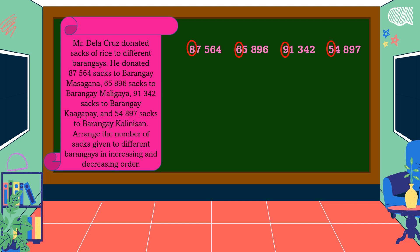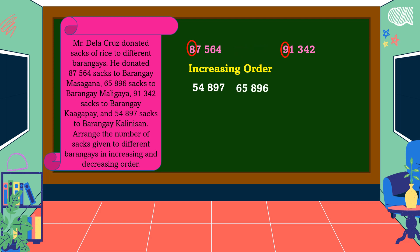What is the smallest number? Five is the smallest number. So if we arrange in increasing order, we start with 54,897 as the smallest number. Next, let's compare 8, 6, and 9. Six is the smallest, so the next number is 65,896.